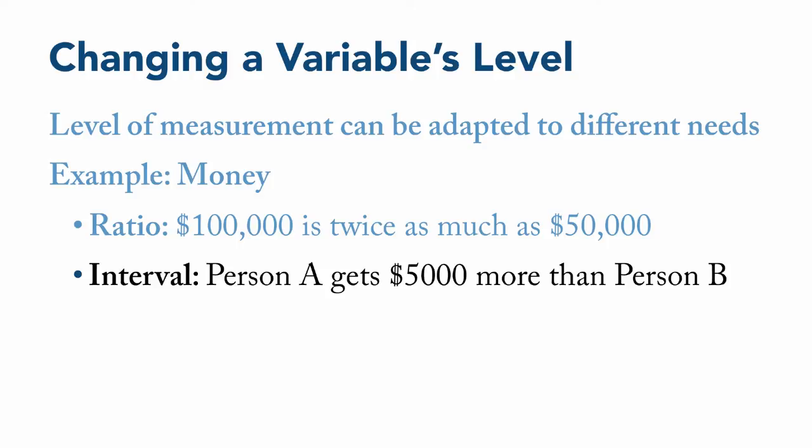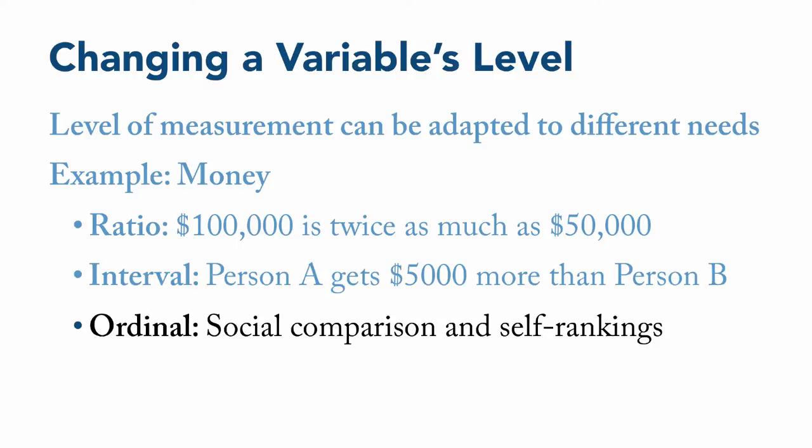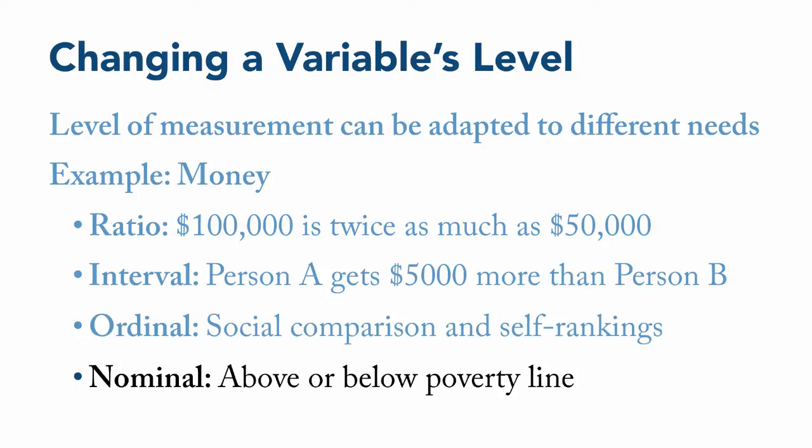Similarly, income might be considered at the ordinal level, where social comparison and self-rankings are more important than actual numbers. I believe that this is psychologically the most useful level for examining income. And finally, income can also be coded as a nominal variable, where a person is simply categorized, for example, as being either above or below the poverty line. Again, the point here is that a variable's level of measurement is not set in stone, but can be adapted to the most useful and informative level in a particular analysis. Think about what your goals are and see how you can adapt your data to help you reach your goals.